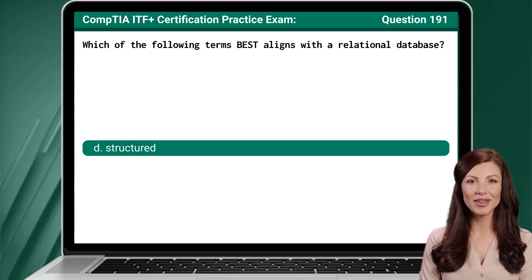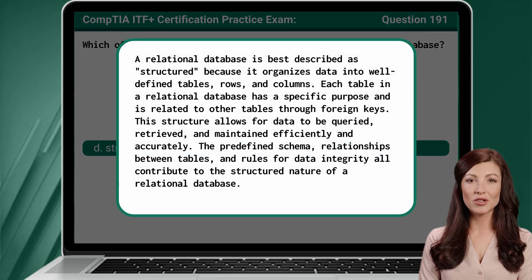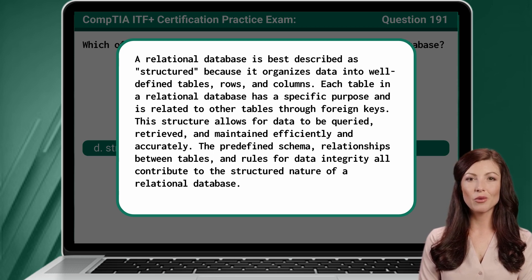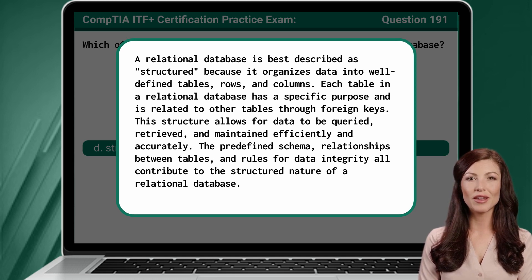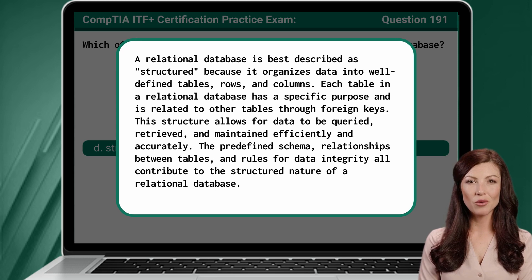The answer is D: Structured. A relational database is best described as structured because it organizes data into well-defined tables, rows, and columns. Each table in a relational database has a specific purpose and is related to other tables through foreign keys. This structure allows for data to be queried, retrieved, and maintained efficiently and accurately. The predefined schema, relationships between tables, and rules for data integrity all contribute to the structured nature of a relational database.